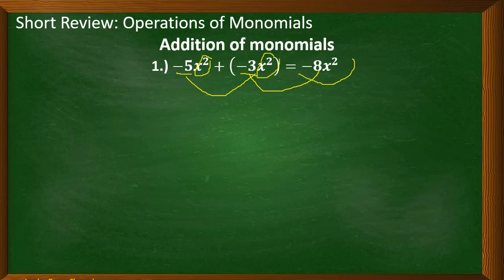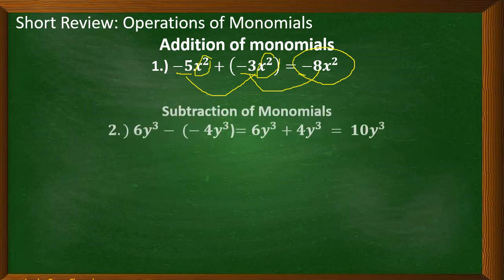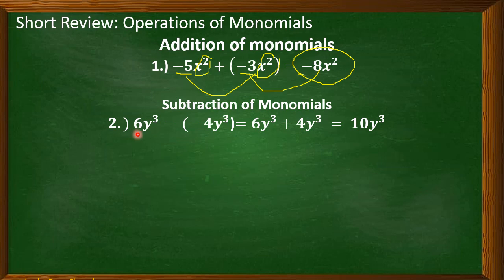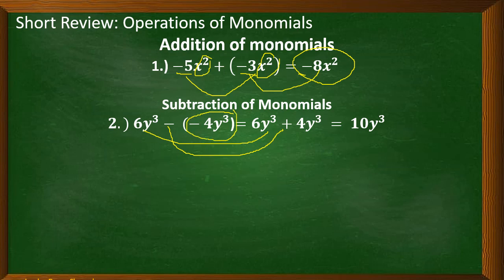For subtraction, 6y cubed minus negative 4y cubed. Apply the rule in subtraction of monomials: copy the minuend, 6y cubed. Next, the operation sign will be changed to addition and the sign of the subtrahend, negative 4y cubed, will become positive 4y cubed. Now apply the rule in addition of monomials: 6 plus 4 is equal to 10, and copy the literal coefficient y cubed. That's why our answer is 10y cubed.